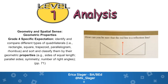Level one is analysis. At this level students perceive shapes as part of a group of similar shapes, noting their properties. Students can identify and describe the components and properties of shapes — for example, an equilateral triangle can be distinguished from other triangles because of its three equal sides, equal angles, and symmetries. However, students at this level cannot yet identify properties in a logical order, meaning they don't understand that if a triangle has three equal sides it must also have three equal angles. A grade four curriculum expectation at this level is identifying and comparing different types of quadrilaterals and sorting them based on geometric properties. A sample question: how can you be sure that the red line is a reflection line?